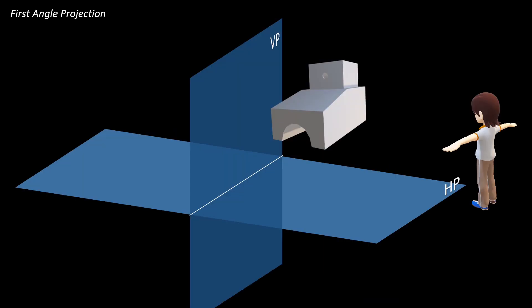In orthographic projection, we have two angles of projection: first angle projection and third angle projection. In first angle projection, the object is in the first quadrant. In third angle projection, the object is in the third quadrant. Second and fourth quadrants have no projections because the views overlap.